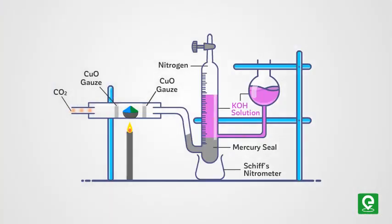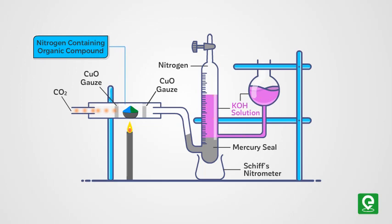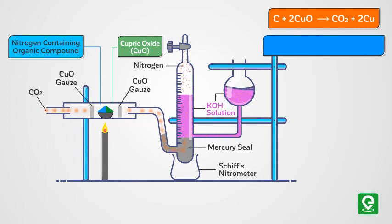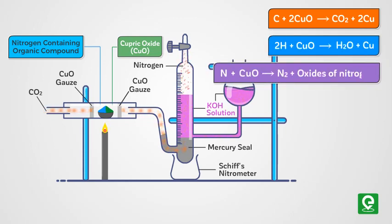In Duma's method, a known mass of the nitrogen containing organic compound is heated with cupric oxide in an atmosphere of carbon dioxide.